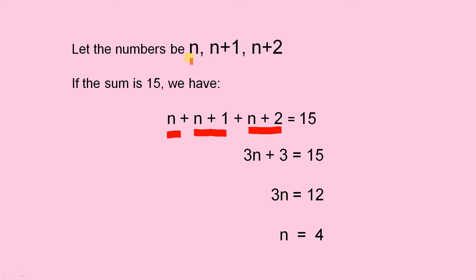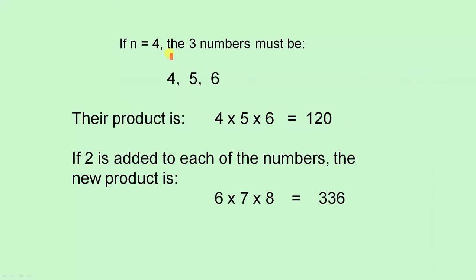In other words the first number is 4. So if n equals 4 the three numbers must be 4, 5, and 6.